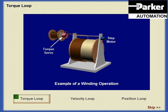Torque servo amplifiers are used in dynamic tension control and other applications where constant force is required, independent of speed. For example, a winding operation requires that the motor maintain uniform tension on the take-up reel, although motor velocity decreases as reel diameter increases.